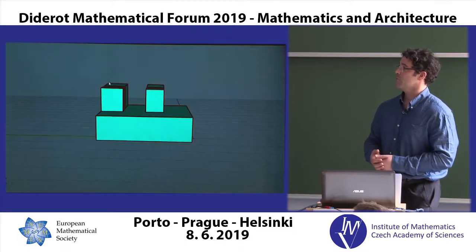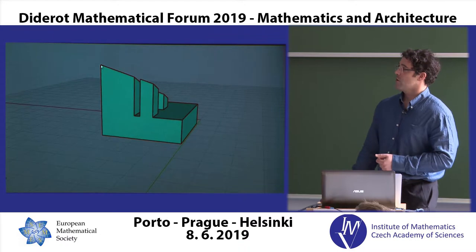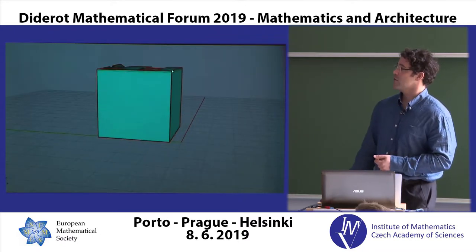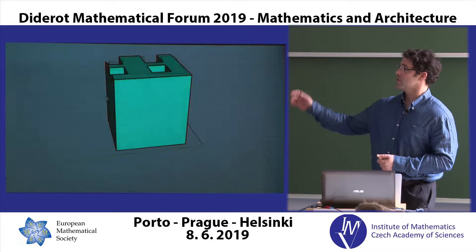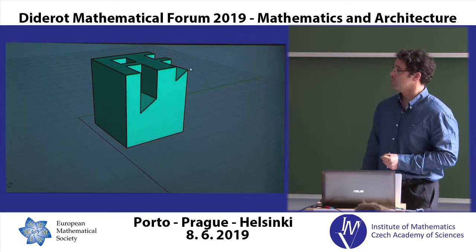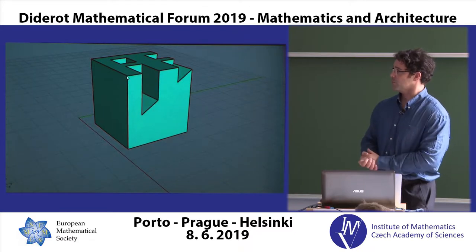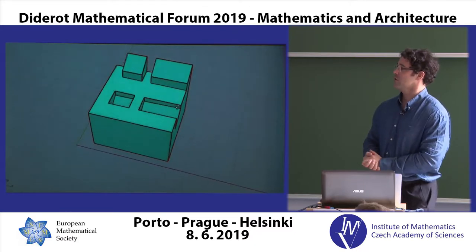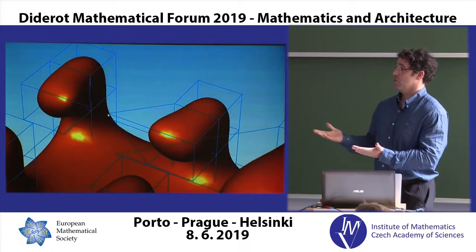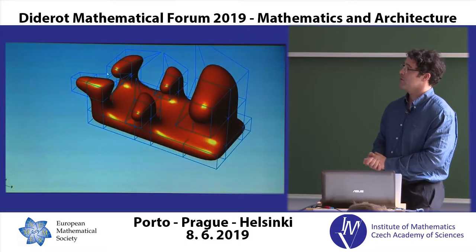In 3D, you can set up constraints — for example, the tops of columns all coplanar, or right-angle constraints on some of the edges. You can build geometry with these kinds of constraints built in.